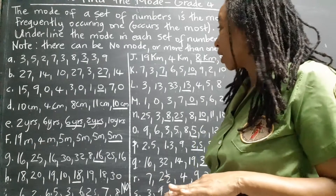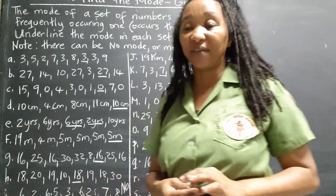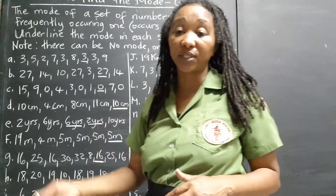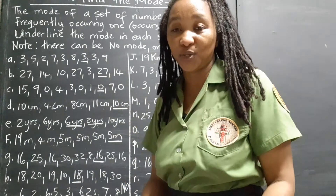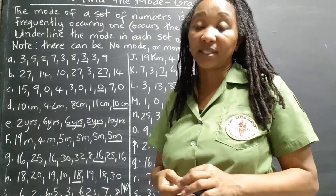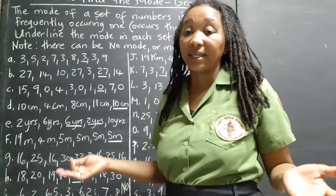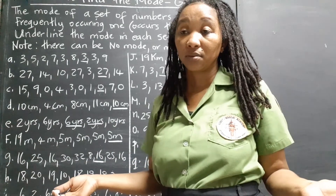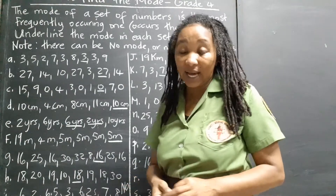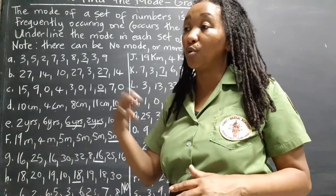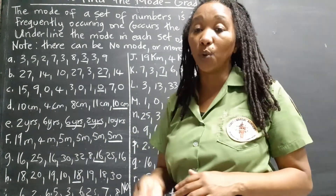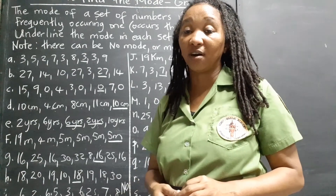To recap: the mode of a set of numbers is the most frequently occurring one — the one that occurs the most, the one that pops out at you, or the one you keep hearing repeated. A set can have no mode if no number is more frequent than the others and they're all listed once. A set can also have more than one mode — the important thing is to identify whichever number or numbers have the highest frequency.